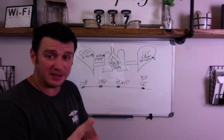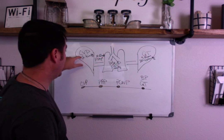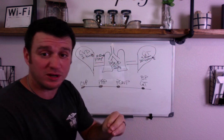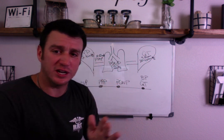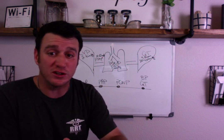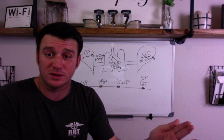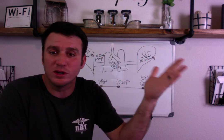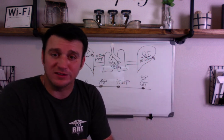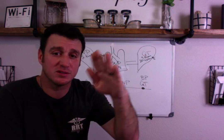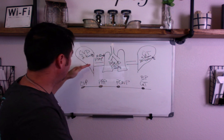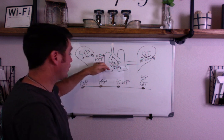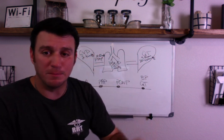Blood returns to the right side of the heart via the inferior and superior vena cava, dumping into the right atrium. This is known as central venous pressure, or CVP — normal is 2 to 6 mmHg. When studying hemodynamics, the most important part is knowing your normal values. Without them, you have no idea what you're looking at. CVP normal: 2 to 6 mmHg.